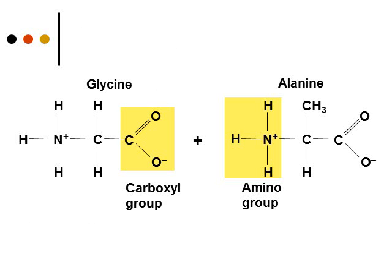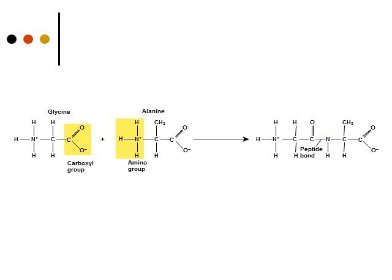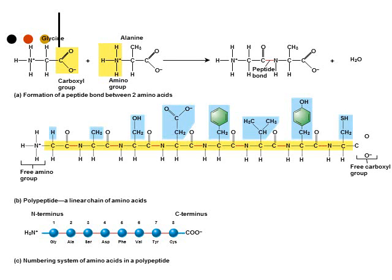Here's an example of two amino acids — glycine and alanine — going through the condensation or dehydration reaction. After that reaction, we have a peptide bond that forms between the two amino acids. Amino acids just keep joining together using that dehydration or condensation reaction, so you get lots of peptide bonds and lots of amino acids bonded together. Eventually you end up with a polypeptide — a linear chain of amino acids that can be anywhere from 100 to maybe 300 amino acids.